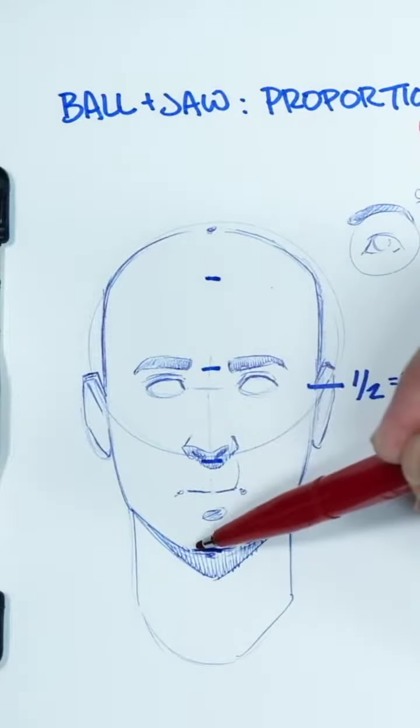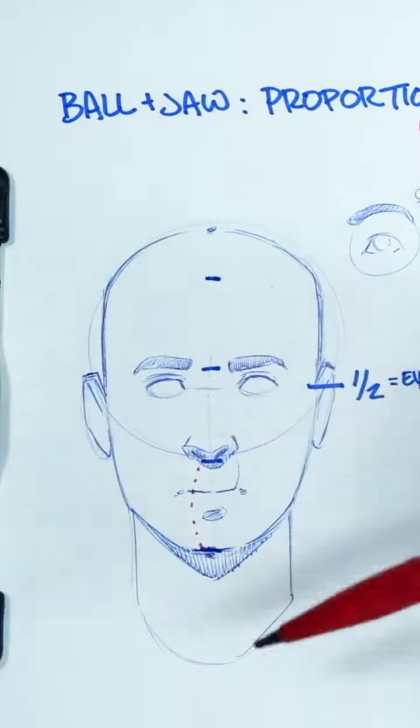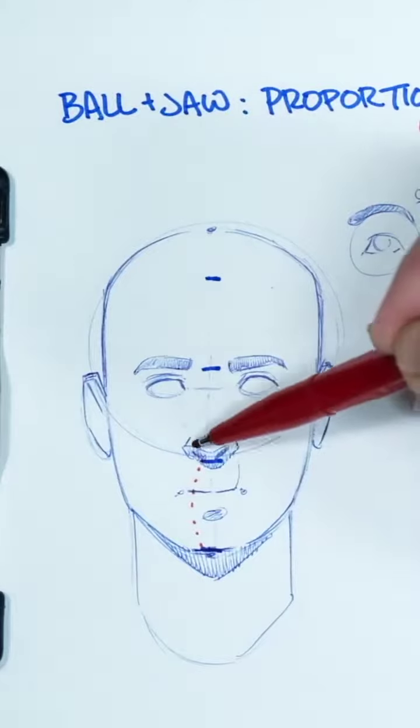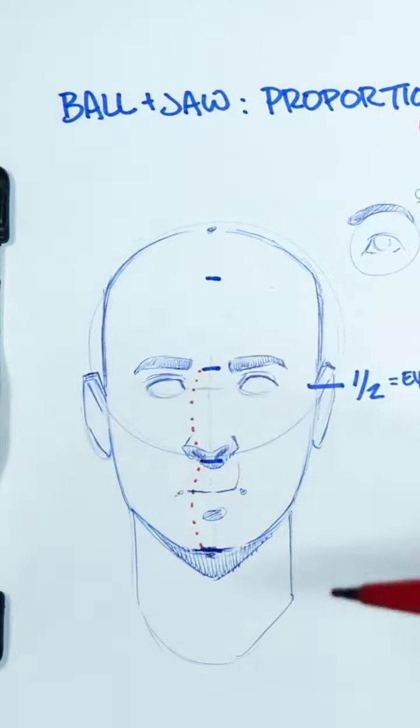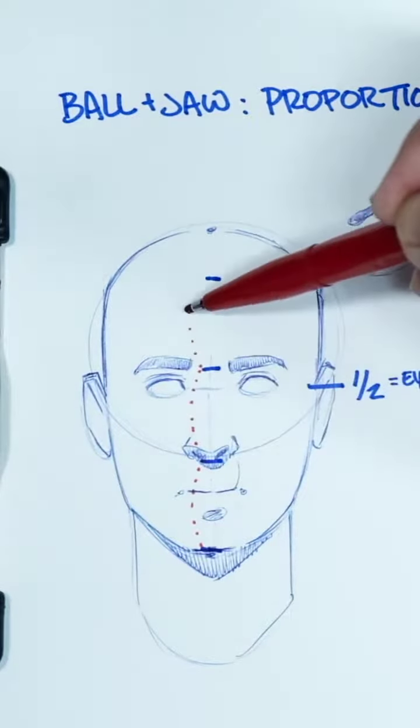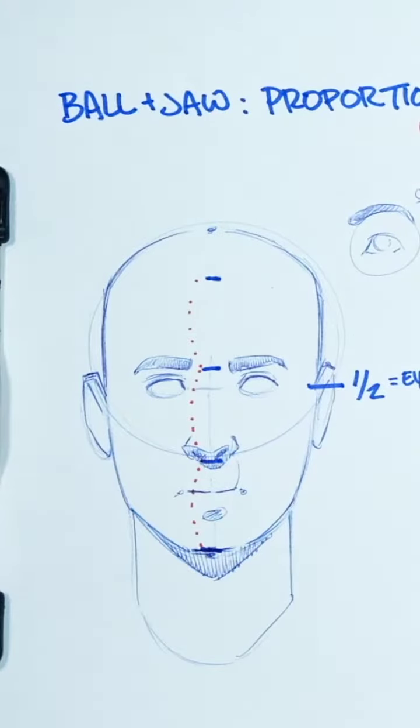The head is three equal units. The chin to the bottom of the nose, the bottom of the nose to the brow, and then finally the brow to the hairline. So not the top of the head, but the hairline, where our hair would start.